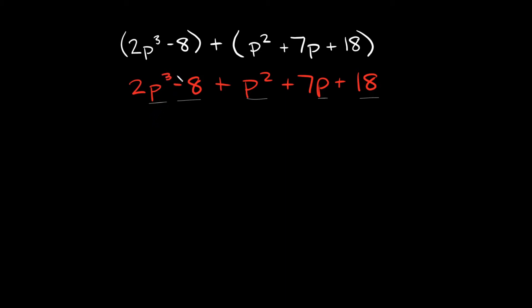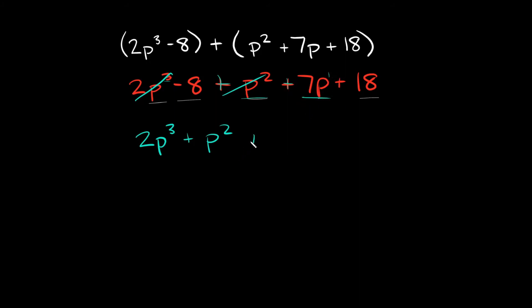The biggest exponent out of all these terms is the 3, so we write 2p cubed first. What's the next biggest? It would be positive p squared, so plus p squared. Then we just have plus 7p — basically p to the first. And then the numbers always go at the end, so we have minus 8 plus 18.